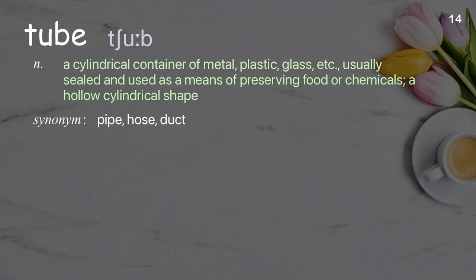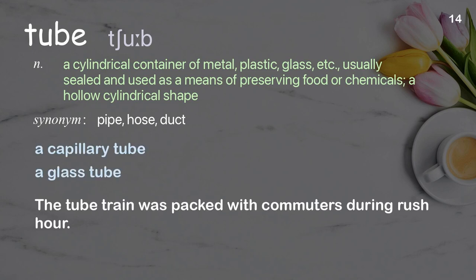Tube: a cylindrical container of metal, plastic, or glass, usually sealed and used as a means of preserving food or chemicals; a hollow cylindrical shape. Examples: a capillary tube, a glass tube. The tube train was packed with commuters during rush hour.